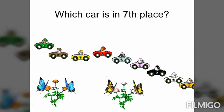Which car is in seventh place? We count from the left — first is green, second is brown, third is yellow, fourth is orange, fifth is blue, sixth is pink, and the seventh one is the black car. Therefore, the seventh car is the black one.